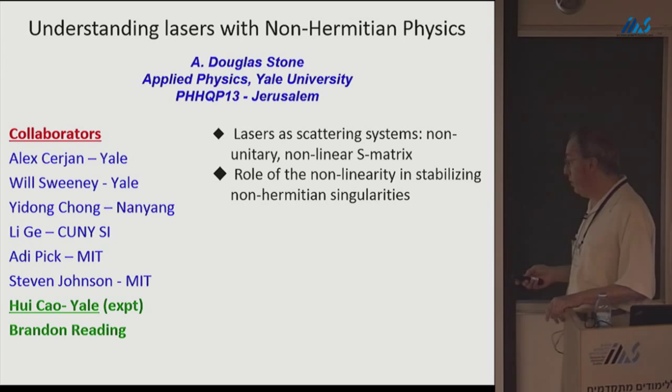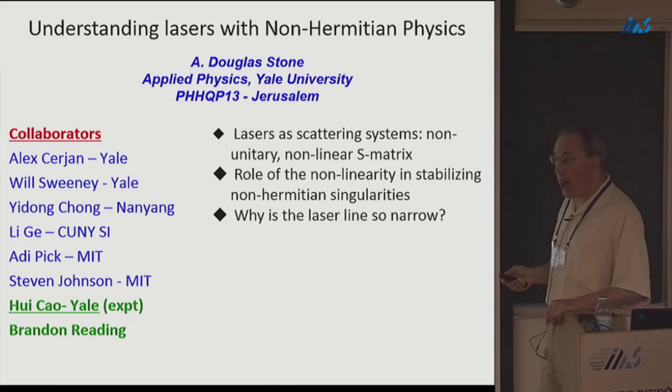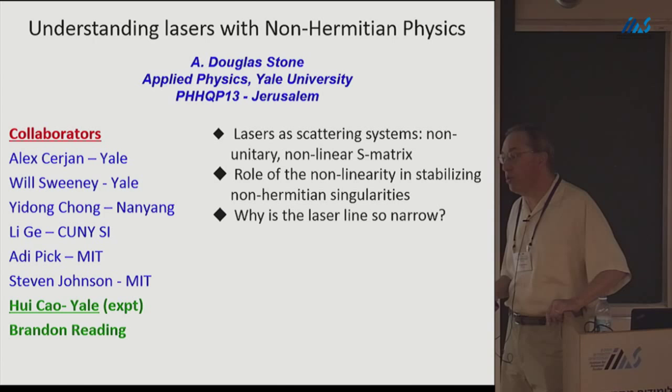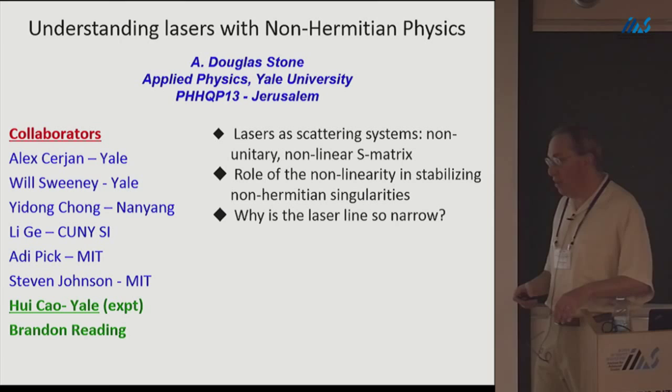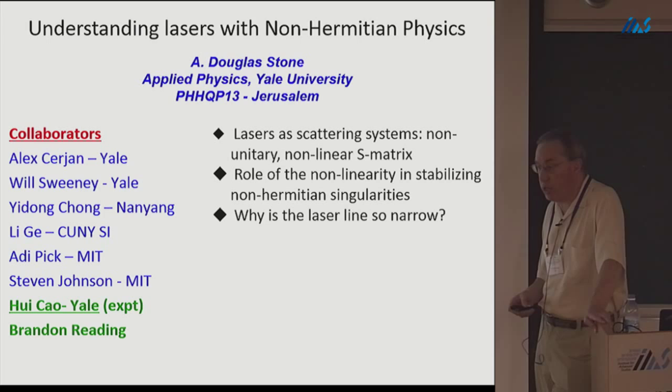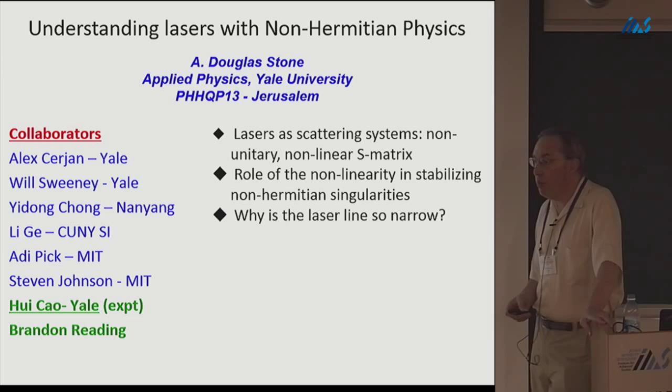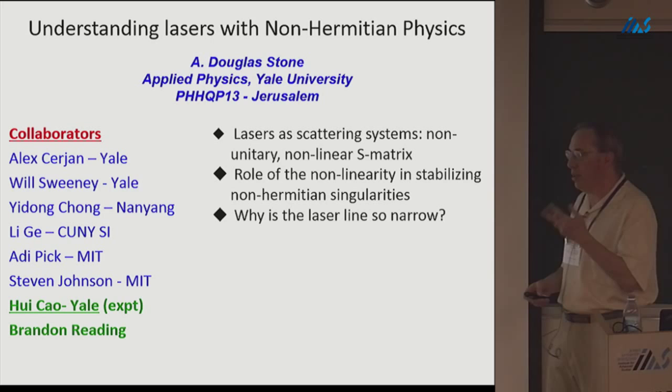What is the notion of a non-linear S matrix? An S matrix is an object where you tell me the inputs and I give you the outputs. Here the actual S matrix depends on the amplitude of the input — it's a non-linear object, but it still takes input to output. You can call it the lasing map. Because we're often interested in linearizing around something, I still think of it as an S matrix — or a self-consistent S matrix.